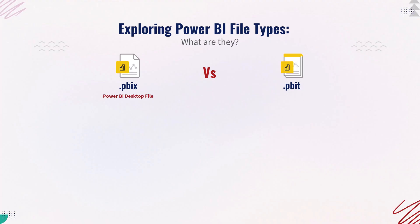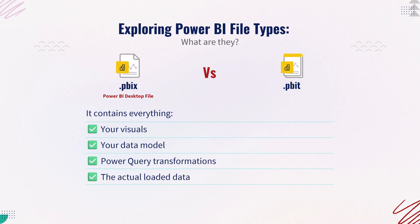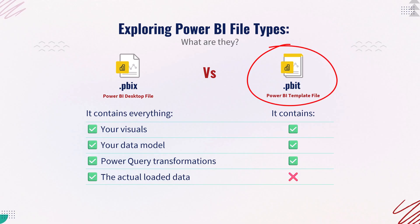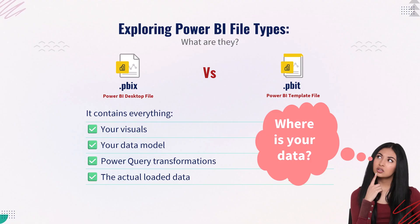The Power BI desktop file is the regular working file in Power BI. It contains everything: your visuals, your data model, Power Query transformations, and the actual loaded data. On the other hand, the Power BI template contains the same structure — all visuals, formatting, and queries — but no data. When someone opens a template file, Power BI prompts them: where's your data? That makes it perfect for reusable dashboards.